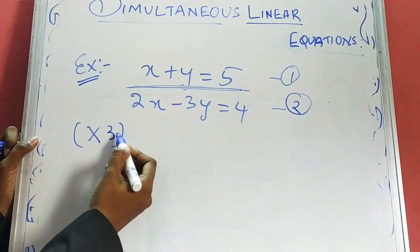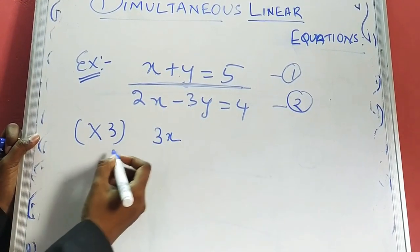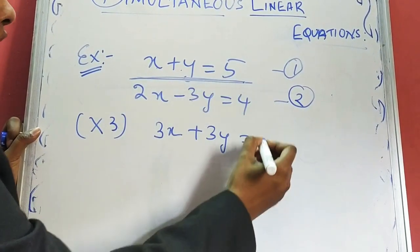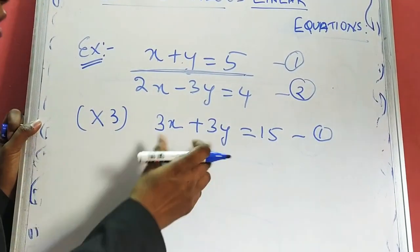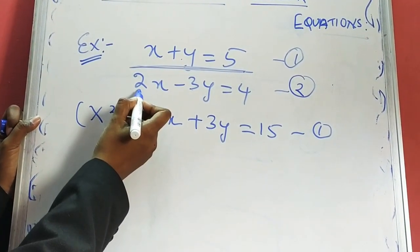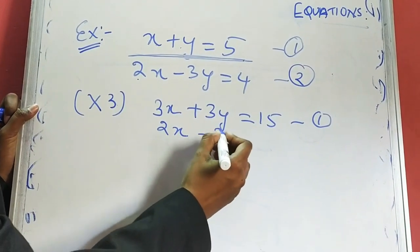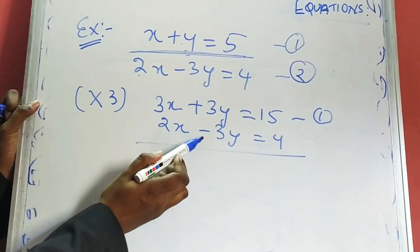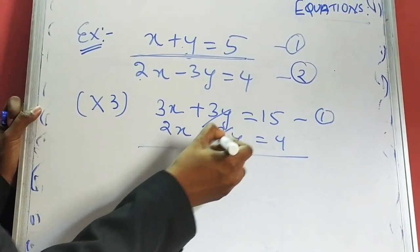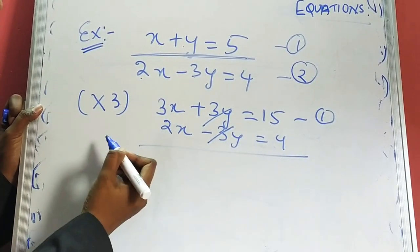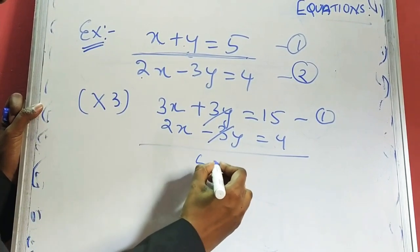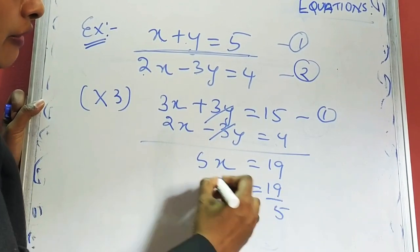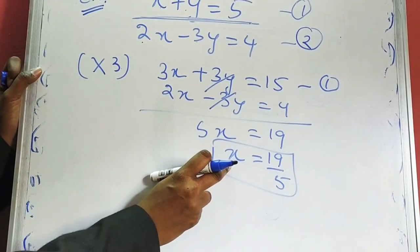We multiply the whole of equation 1 by 3. So 3 into x gives 3x, plus sign as it is, 3 into y gives 3y, equal to 3 into 5 which is 15. This is the new equation 1. We write equation 2 as it is: 2x minus 3y is equal to 4. Since we have two different signs on y, we can eliminate directly. Adding: 3x plus 2x gives 5x, and 15 plus 4 gives 19. Therefore x is equal to 19 by 5.